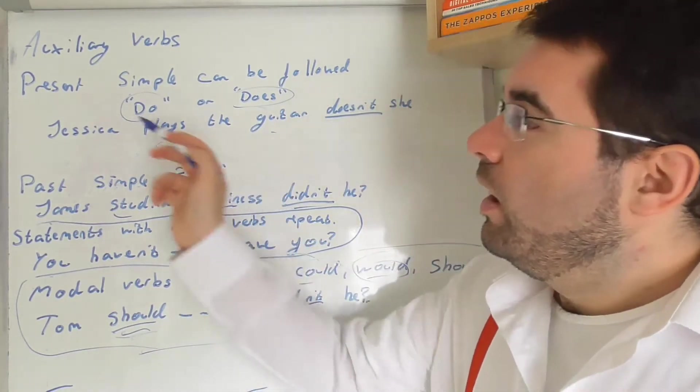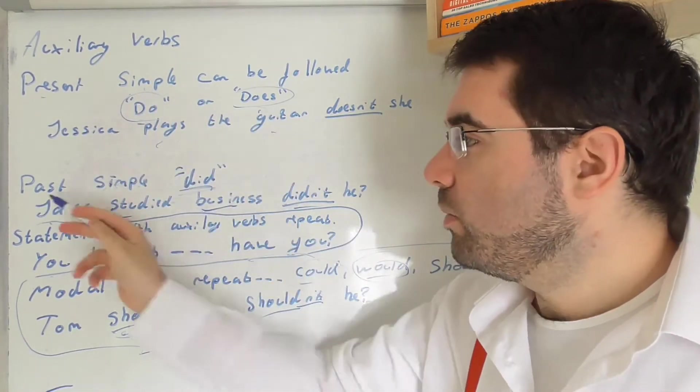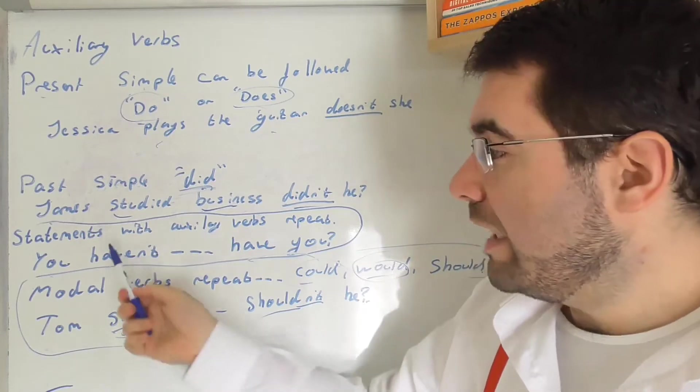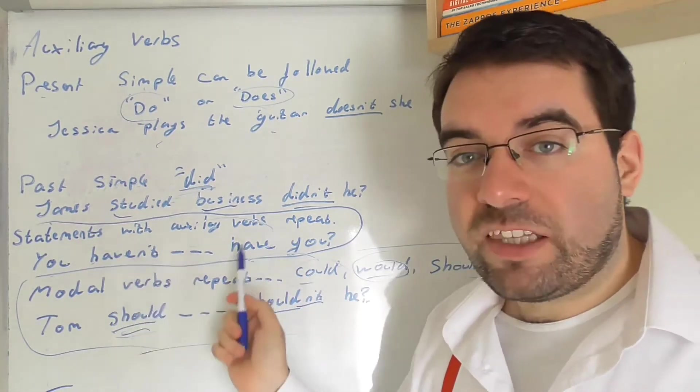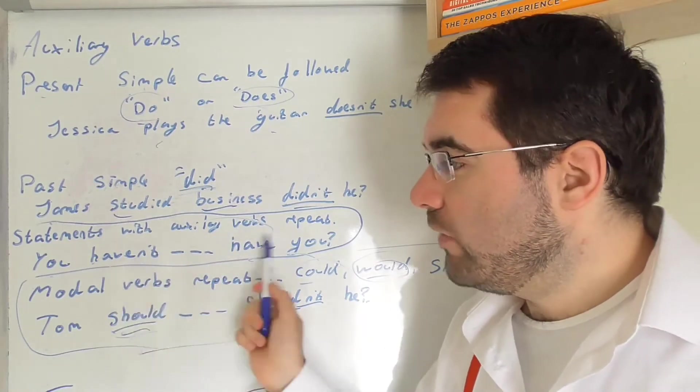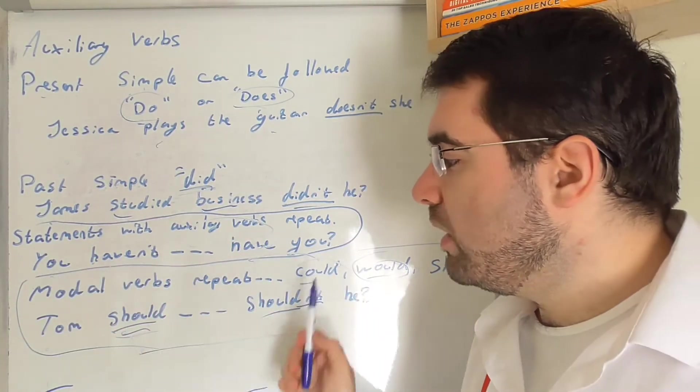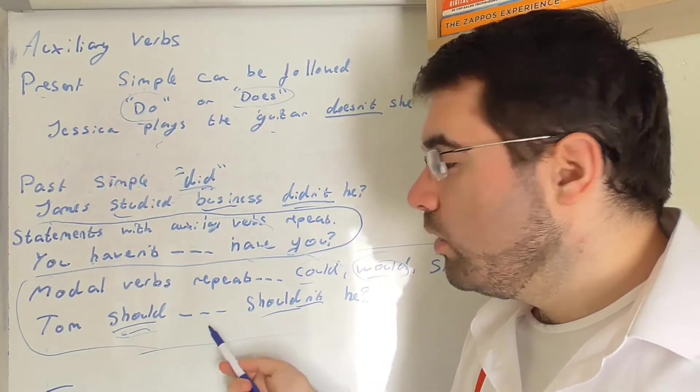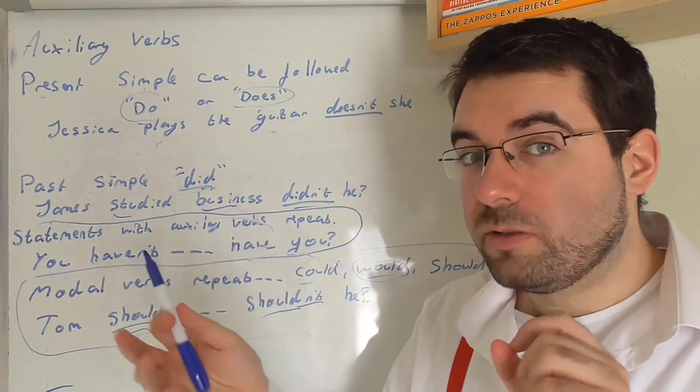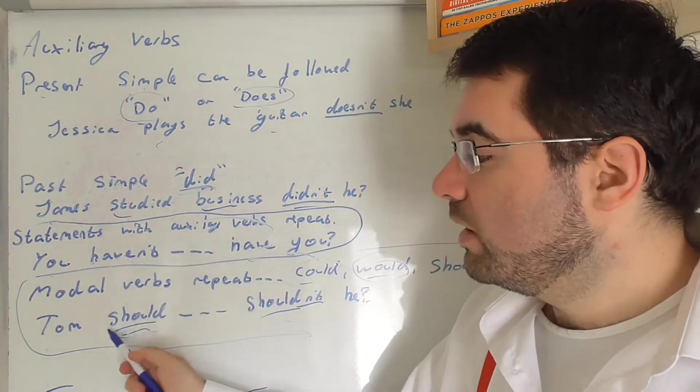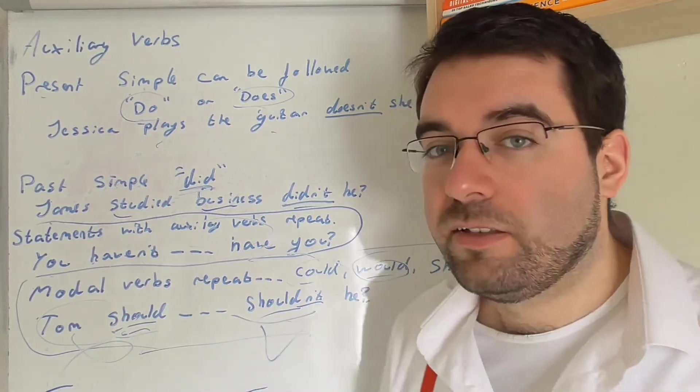So, interesting stuff. Present simple, do, does. Past simple, did. Statements, auxiliary verbs, have. They reflect them over haven't, have, have, haven't. Consistent. They repeat. Modal verbs, repeat also. Tom should have learned English, shouldn't he? Should, shouldn't, shouldn't, should. Again, always the opposite. Positive here, negative there. Negative here, positive there.